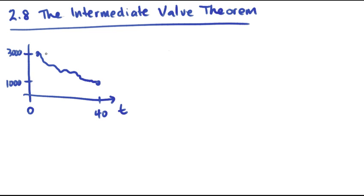The Intermediate Value Theorem tells us that they have to pass through every value on their way down between 3,000 and 1,000 at least once. Here it is formally.